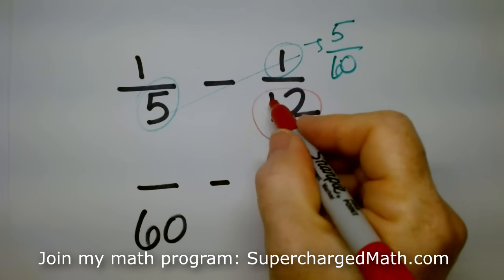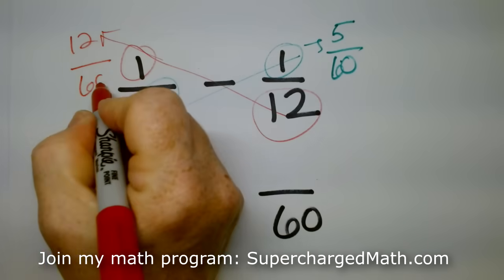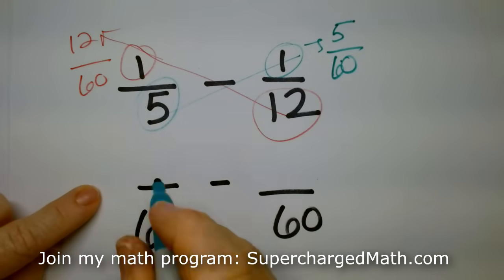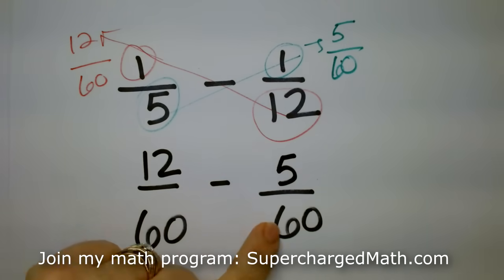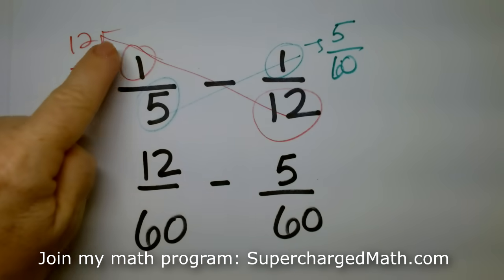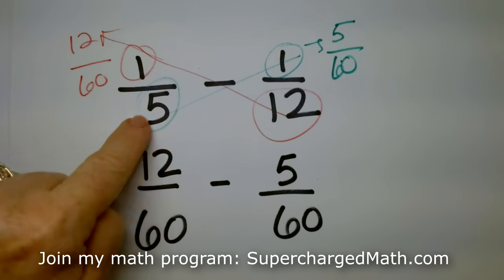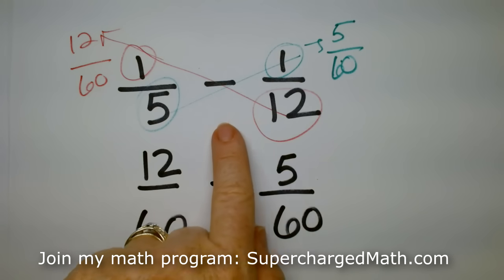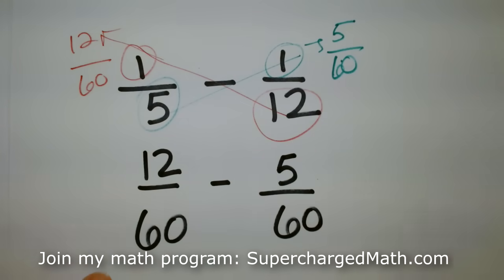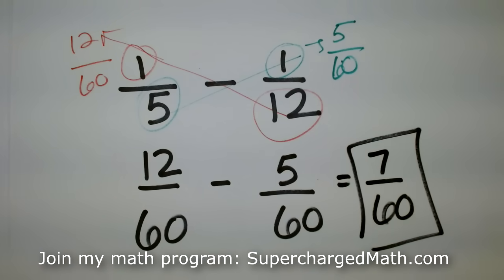And twelve times one is twelve over, and they're going to be over the same thing. So this is, oh, that's the wrong number. Wrong color. Twelve over sixty minus five over sixty. So it's the same thing we were just doing, but we're just saying, twelve, I'm going to multiply it top and bottom. So I have twelve over sixty. And the five, I'm going to multiply it top and bottom. So one times five is five. And five times twelve is sixty. And then twelve minus five is seven over sixty.